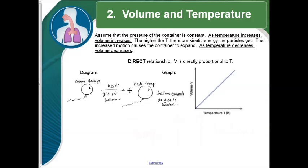All right, our next relationship is volume and temperature. This time we're going to assume that the pressure of the container is constant and can't be changed. Now, if we increase temperature, the volume will also increase. The higher the temperature, the more kinetic energy the particles get, and their increased motion will actually cause the container to expand. If we decrease the temperature, the volume will also decrease. For example, if we have a balloon at room temperature and we heat it up, the balloon's volume will increase, because the air inside is moving faster and with greater force. It will try to expand, and because the container will allow it to expand, the volume will increase. This is also a direct relationship. So key point to remember for this one, if temperature increases, volume also increases.